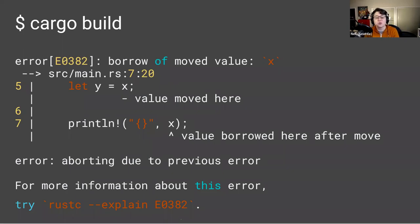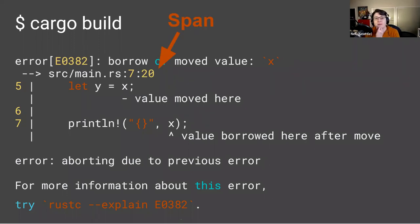This error tells us we're attempting to use the value of a variable — in this case x — after it has been moved. The Rust compiler does not allow us to do this, unless we're running it within an unsafe block, but most of the time you're running normal Rust code. Something I'd like to specifically call out is how the compiler shows where the error was generated from in the original source code through a span. Even though we had lowered this code to MIR, we still tracked what items in the MIR corresponded to what places in the original Rust code. This is very helpful to the end user.